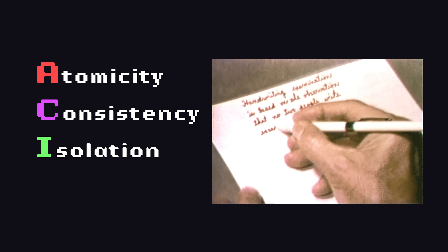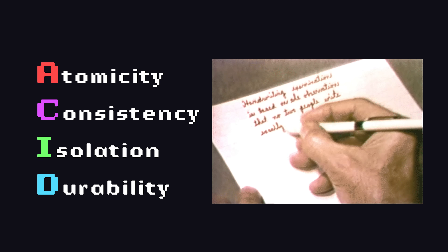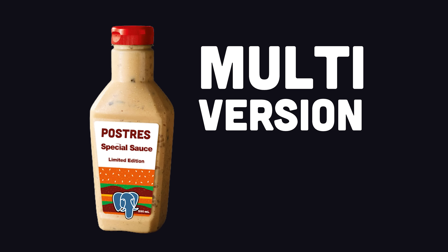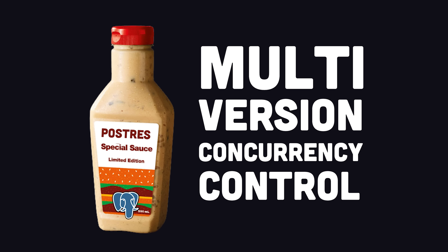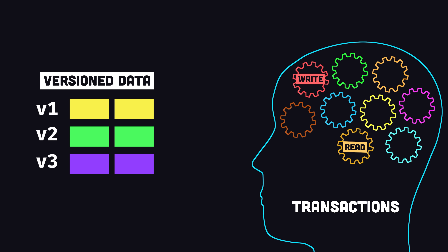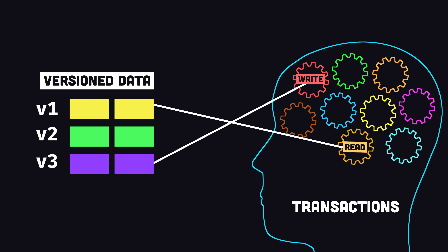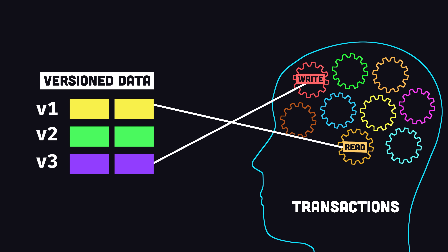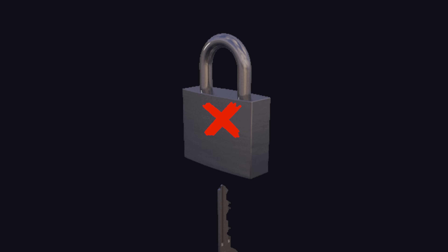When writing data, it runs fully ACID-compliant transactions, but also adds its own special sauce called multiversion concurrency control, which gives each transaction a snapshot of the database, allowing multiple transactions to run at the same time without traffic jams or locks.